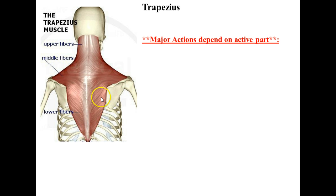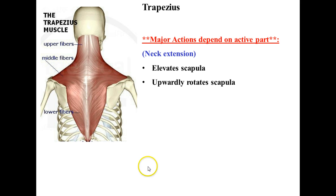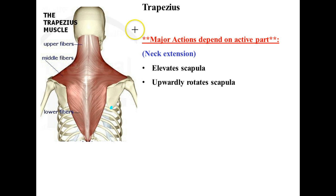Can you guess what the lower portion is going to do? What is the middle portion going to do? And what is the upper portion going to do? The upper portion is going to elevate the scapula by pulling that scapula upward. It's also going to what's called upwardly rotate — that's when the inferior angle rotates up and around, and that happens when you lift your arms over your head, like you're reaching for something overhead.